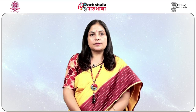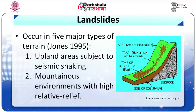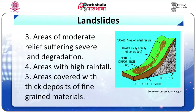Figure 1 shows a landslide progression. The loosened mass located in the area of initial failure moves down the slope and deposits in the fan at the foothill region. Landslides mostly occur in five major types of terrains: upland areas subject to seismic activities, mountainous environments with high relative relief, areas of moderate relief suffering severe land degradation, areas with high rainfall, and areas covered with thick deposits of fine-grained material.